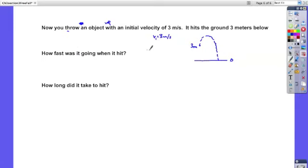Okay, how fast is it going when it hit? Well, look at what we know. We are looking for VF, we know VI, positive 3 meters per second, and we know D. Now, in this problem, we're starting at 3 meters and we're going to go to 0. So, D, that displacement, is going to be DF minus DI, 0 minus 3. So, D is going to be negative 3 meters.